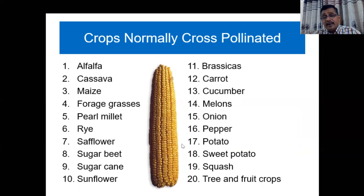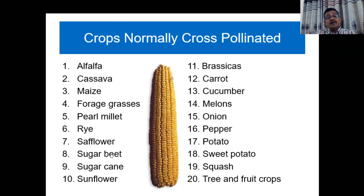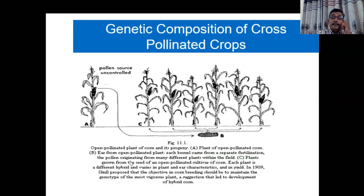For cross-pollinator crops, you should know what crops are available and what breeding methods are used. These include alfalfa, cassava, maize, forage grasses, pearl millet, rye, safflower, sunflower (bee-pollinated), sugarcane, sugar beet, carrot, brassica, cucumber, melon, onion, pepper, potato, sweet potato, squash, and peas. Many seed companies are working on these crops, which have high commercial value.